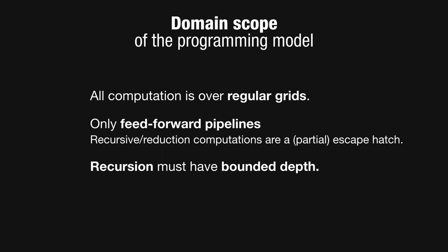The specific scope of this programming model is what lets us have lots of flexibility in scheduling. We only model functions over regular grids — that means Halide is a poor fit for irregular data structures like you might use in bundle adjustment or KD-tree nearest neighbor algorithms. Second, we focus on feed-forward pipelines. We can express recursive functions and reductions, but these have to have bounded depth at the time they're invoked.